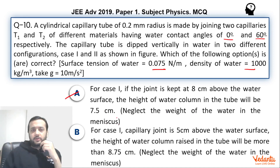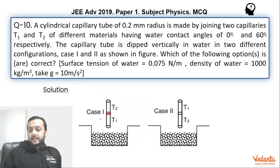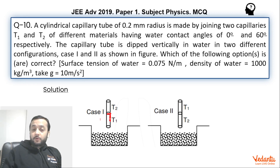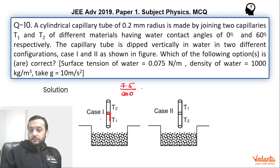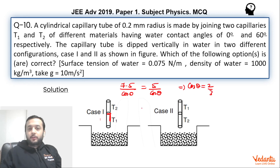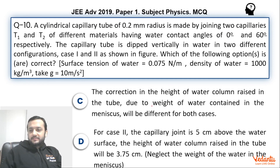We are ignoring the meniscus volume for now. For case 1, if the capillary joint is only 5 cm above the water surface, the claim is that water rises more than 8.75 cm. But in this case, water wanted to rise 7.5 cm but the joint is at only 5 cm. The angle of contact will adjust: 7.5 / cos 0° = 5 / cosθ, giving cosθ = 2/3. Water stops at 5 cm. So this option B is wrong.